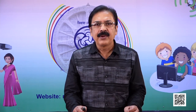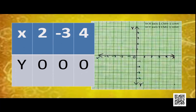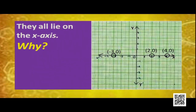Today we will learn about the equation of the x-axis and y-axis. Let's see where the points (2, 0), (-3, 0), (4, 0), and (n, 0) lie for any real number n in the Cartesian plane. If we plot these points on the graph, we see that (2, 0) is a point on the x-axis, (-3, 0) is also on the x-axis, and (4, 0) is also on the x-axis. From this, we can conclude that they all lie on the x-axis.